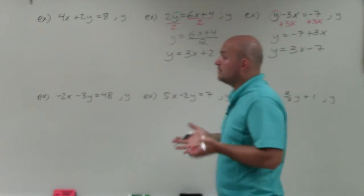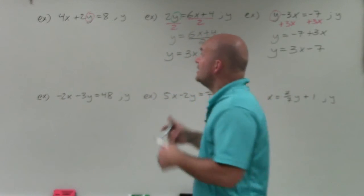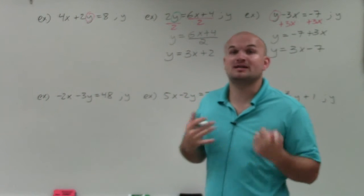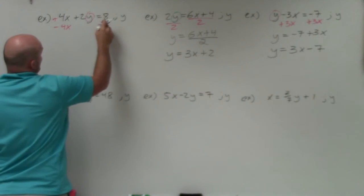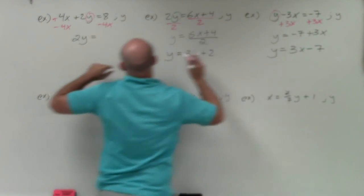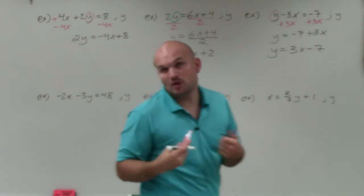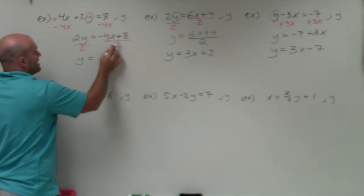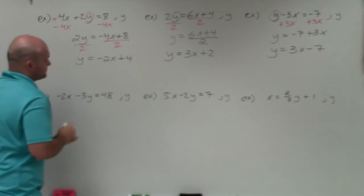Now let's go back to this problem. We're solving for y again, and I'll pin it. My y is being multiplied by 2 and being added by 4x. Using inverse operations for two-step equations, we always undo addition and subtraction first. So I subtract 4x from both sides, leaving 2y equals negative 4x plus 8. Then dividing by 2 on both sides, negative 4x divided by 2 gives negative 2x, and 8 divided by 2 gives 4. Final answer: y equals negative 2x plus 4.